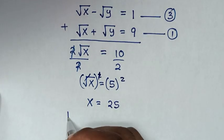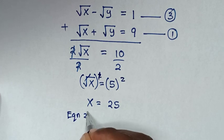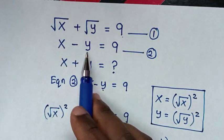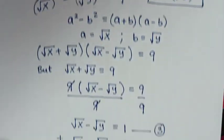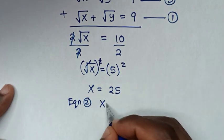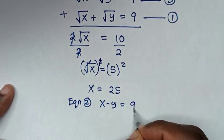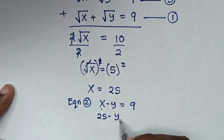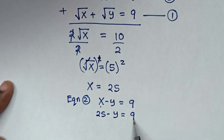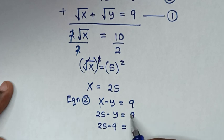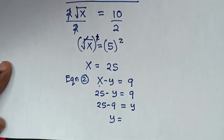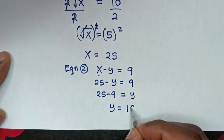To find y, we use equation 2: x minus y equals 9. Substituting x equals 25 gives 25 minus y equals 9, so y equals 25 minus 9, which is 16.